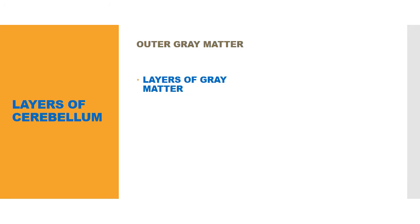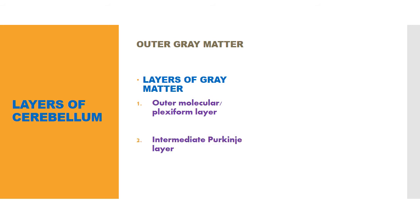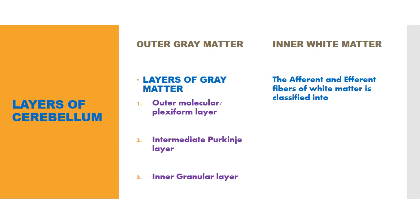Coming to the layers of the cerebellum: there are two layers — the outer gray matter and the inner white matter. The outer gray matter contains three layers: the first is the outer molecular or plexiform layer, the second is the intermediate Purkinje layer, and the third is the inner granular layer. The inner white matter contains afferent and efferent fibers classified into association fibers, commissural fibers, and projection fibers.